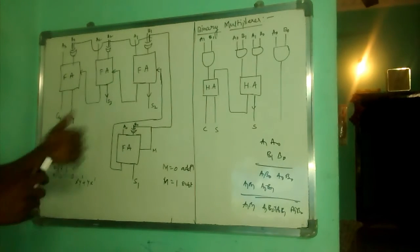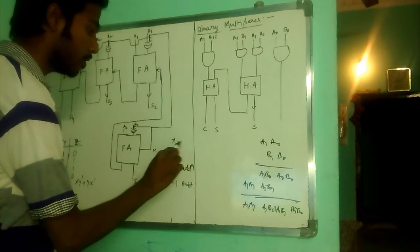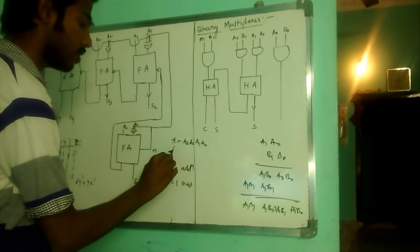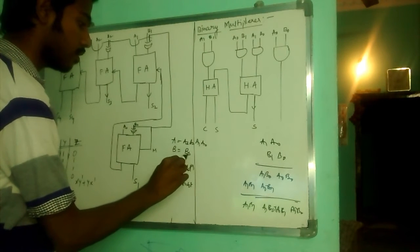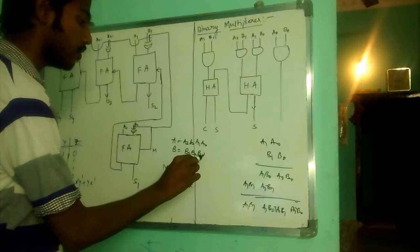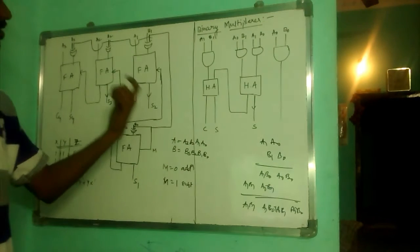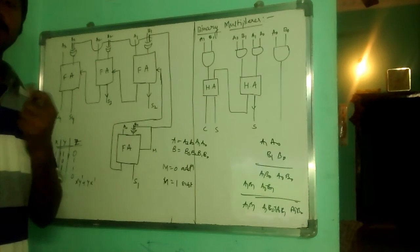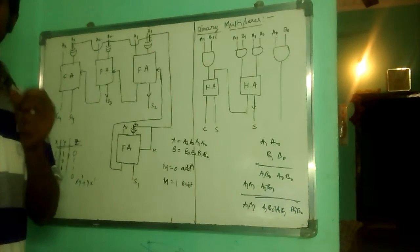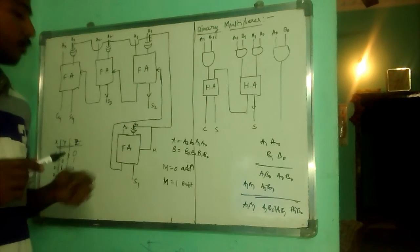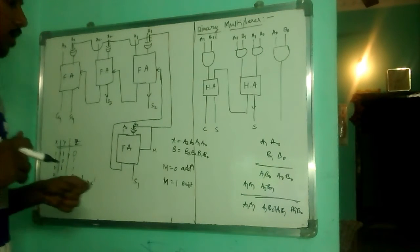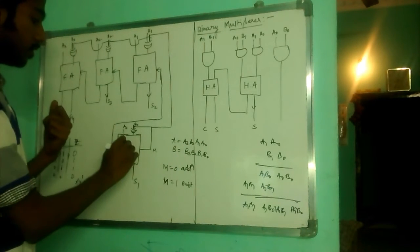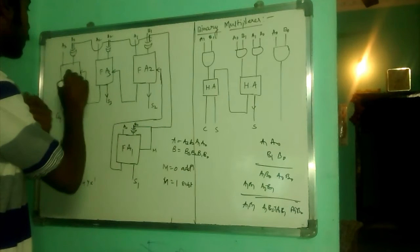So, we consider two numbers, A3, A2, A1, A0, B3, B2, B1, B0 for adder subtractor circuit. For adder subtractor, we have to implement two arithmetic operations, both addition and subtraction, using the same circuit. What I have given is, I have given A0 to full adder 1, full adder 2, full adder 3, full adder 4.